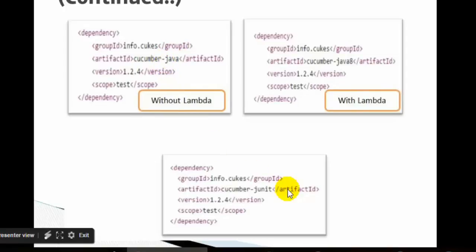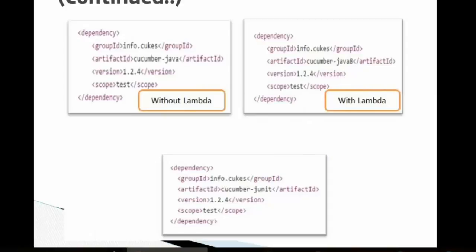To integrate Cucumber and JUnit, you will need the cucumber-junit dependency in your Maven project. In the next lecture you will learn how to update your pom.xml file to include these dependencies and how to create a simple Maven project to work with Selenium and Cucumber. Stay tuned for the next lecture.